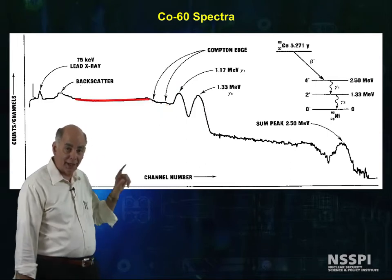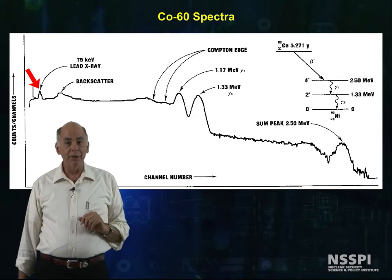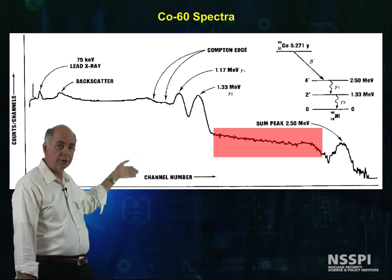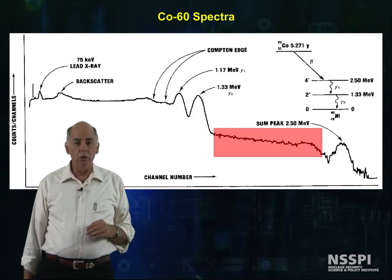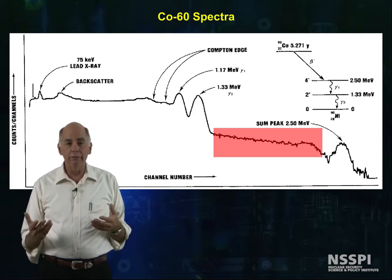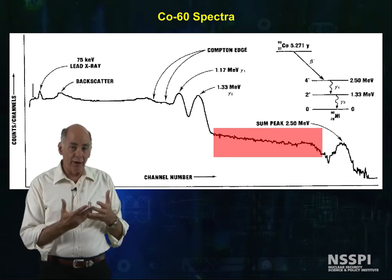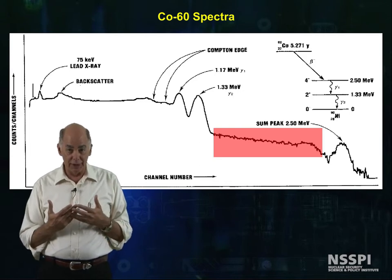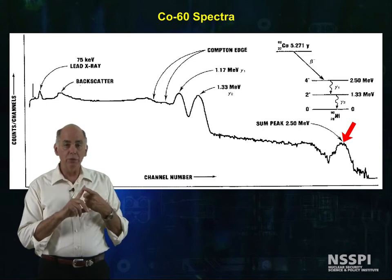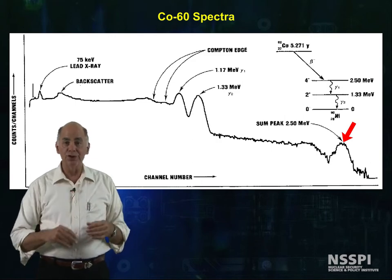Here we see the Compton continuum. We see a small backscatter peak, and we see a 75 keV lead X-ray. Above the photopeaks, we see a region with noise from either higher gamma rays or from summing of one of the principal gammas with a Compton interaction that happened within the resolving time of the detector, and we see a sum peak where two of these principal gamma rays have interacted in the scintillator within the resolution time of the electronics and summed together.